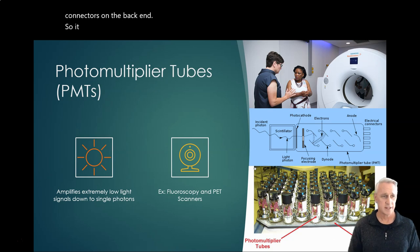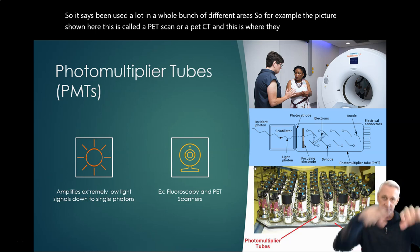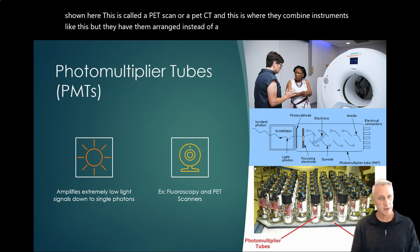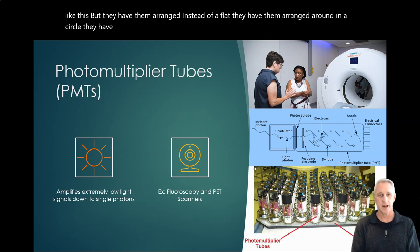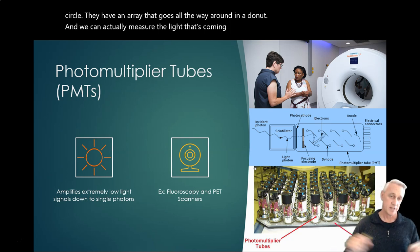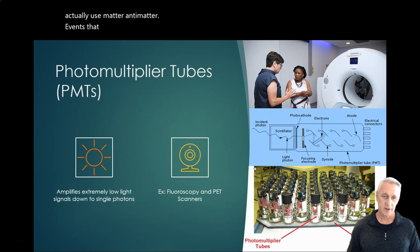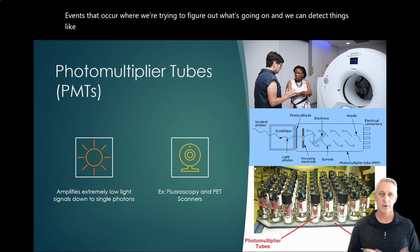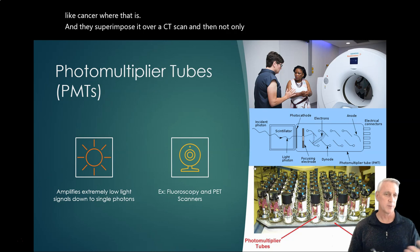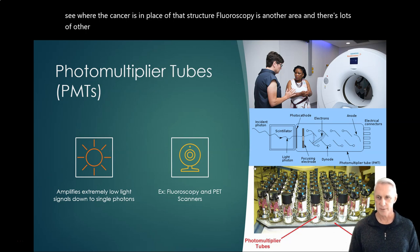This technology has been used in many different areas. For example, in a PET scan or PET-CT, instruments like this are arranged in a circle — an array that goes all the way around in a donut shape. We can measure the light coming off from annihilation events; they actually use matter-antimatter events to detect things like cancer and locate where it is. The PET image is superimposed over a CT scan so you can see not only the structure but where the cancer is within that structure. Fluoroscopy is another area, and in physics there are many other applications for photomultiplier tubes.